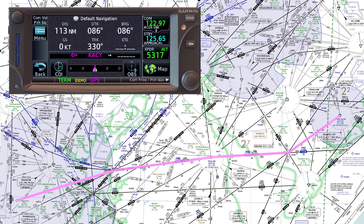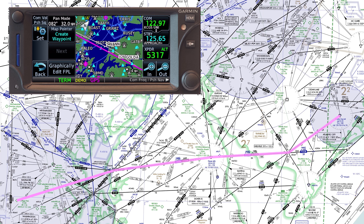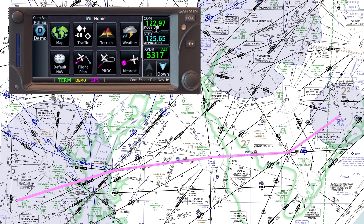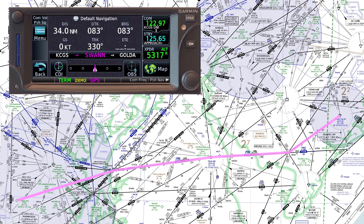Now if we go to our default nav page we see that we're still being navigated direct to Atlantic City, which is obviously not what we want. We want to go to our first fix along the cleared route which is Swan. The pink line is the active segment we're navigating on — GPS navigation is mostly an exercise in following that pink line. The white lines are the inactive segments of the flight plan. The pink line is taking us direct to Atlantic City; we want to change that. So we go back to the flight plan, scroll up, tap Swan, and hit activate leg. This makes the segment between College Park and Swan active. Pink is active, white is inactive.